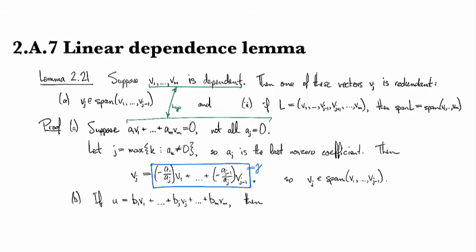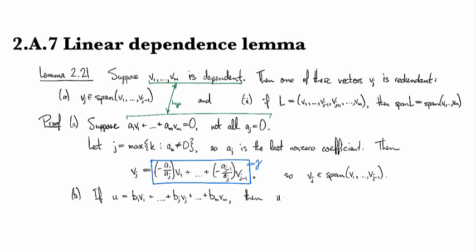Then u looks like b_1 v_1 plus up to b_j gamma. Maybe I'll do that in blue just to be emphatic. Then I've got this one.